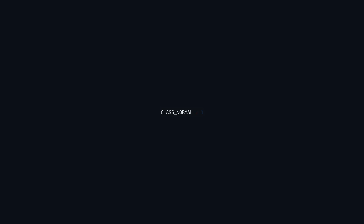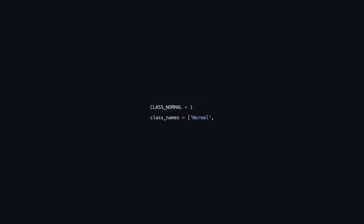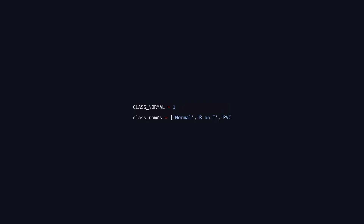This code defines a constant called class_normal with a value of 1, indicating a specific class type within a classification system, likely for medical or signal processing applications. A list named class_names contains string representations of various classifications such as Normal, RnT, PVC, SP, and UB. This suggests the code is designed to categorize or label different data points or events, and the constant and list provide a clear mapping between numerical identifiers and their corresponding descriptive labels.